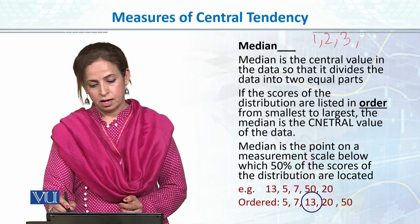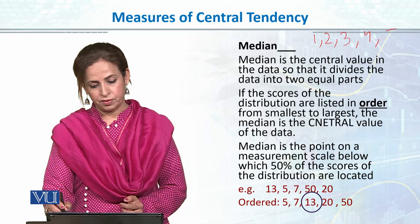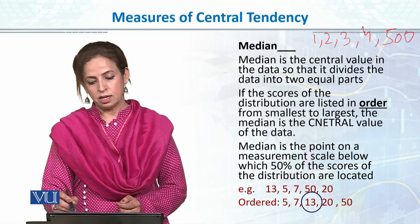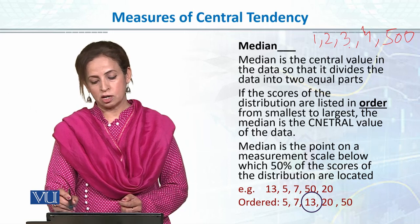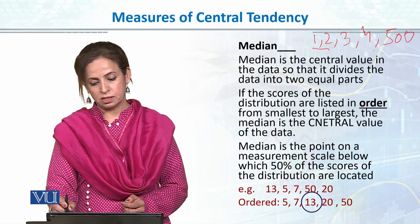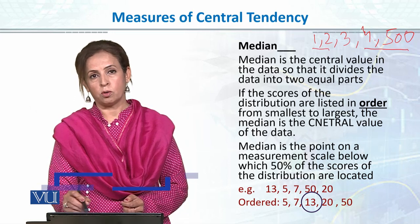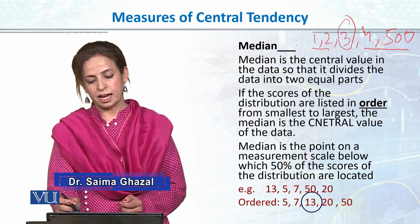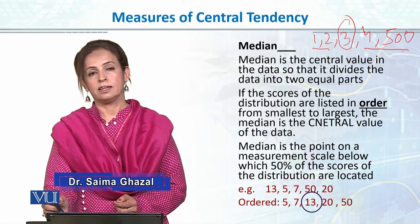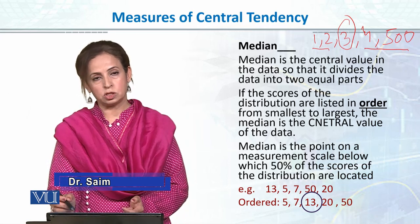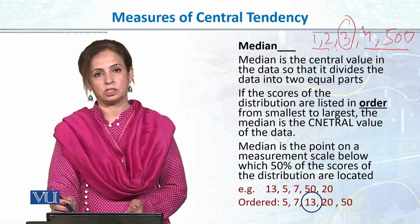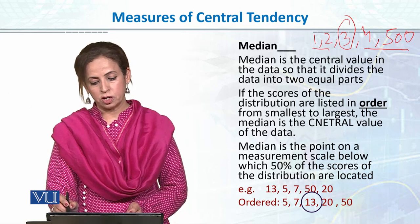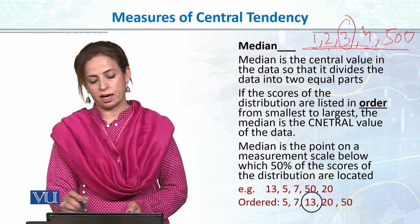Jaise pichle example mein baat ki, agar meri data mein values one, two, three, four, or fifty hain, to iska matlab hai ki chahe yahan pe five hundred bhi daal dhu, still it is the central value of the data — which is three. Aap extreme pe chahe five thousand ya five million daal dhiye, still the median will be the same, which is three, which is more accurate to report because majority of the data is at this end.